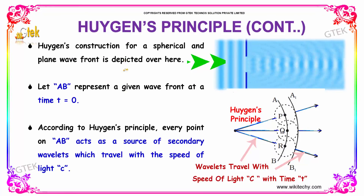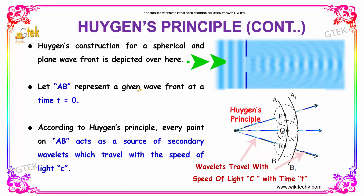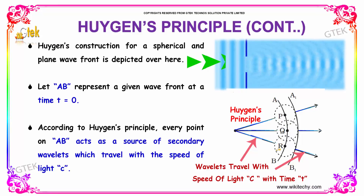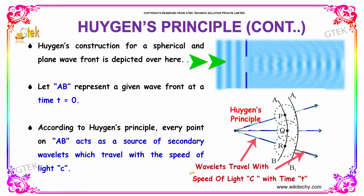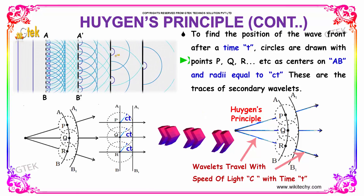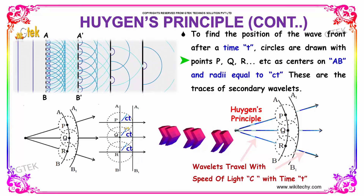Huygens construction for a spherical and plane wavefront is depicted over here. This is a plane wavefront and this is a spherical wavefront. Let AB represent a given wavefront at a time t. According to Huygens principle, every point on AB acts as a source of secondary wavelets, which travel with the speed of light. To find the position of the wavefront after a time t, circles are drawn with P, Q, and R as centers on AB and radius equal to c times t.